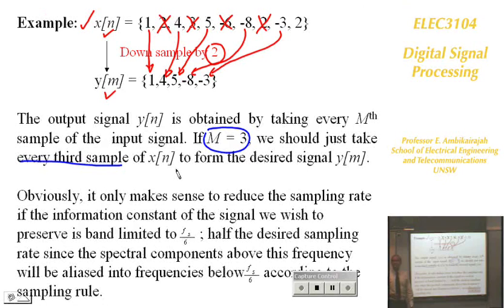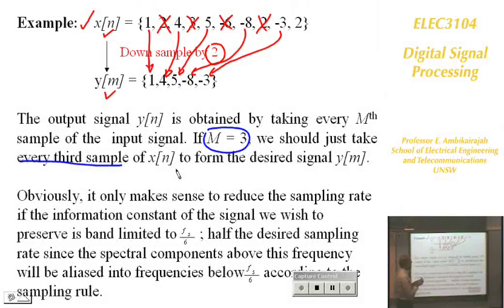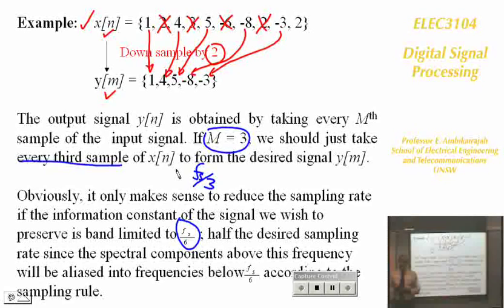To reduce the sampling rate, you must bandlimit the signal first. If the sampling rate is Fs, the signal must be bandlimited to Fs/2. If the new sampling rate is Fs/3, the signal must be bandlimited to Fs/6. Otherwise, you will cause aliasing — you cannot simply drop samples without filtering first.